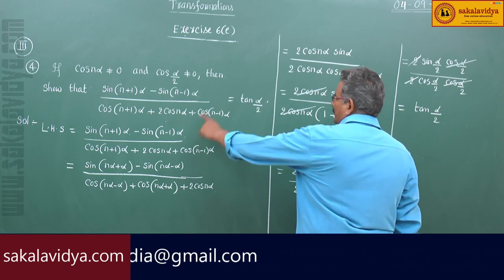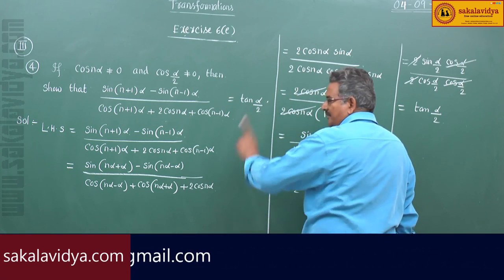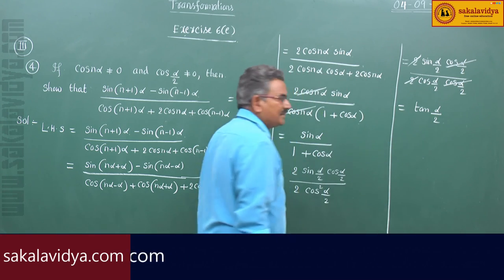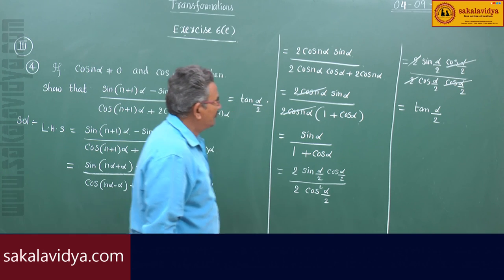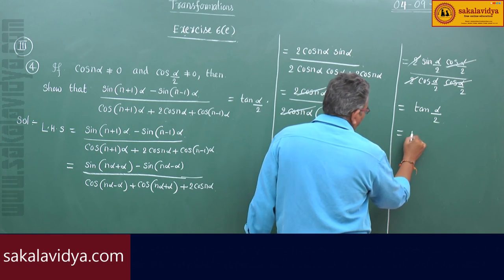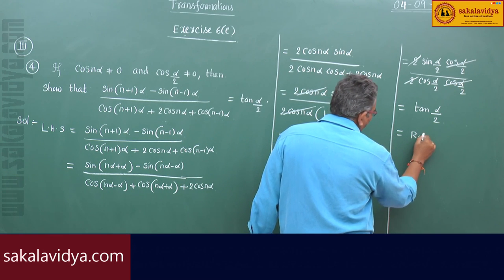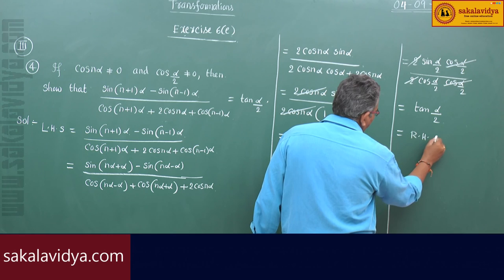The 2 and one cos(α/2) cancel, leaving tan(α/2). So the left hand side equals tan(α/2), which is equal to RHS. Hence proved.